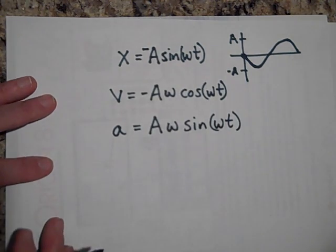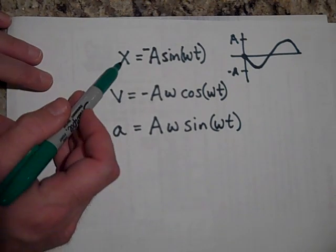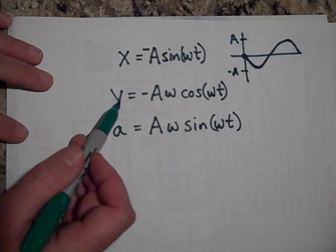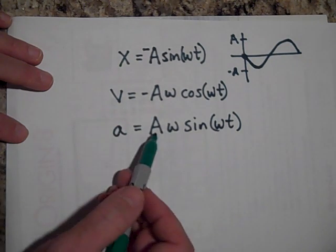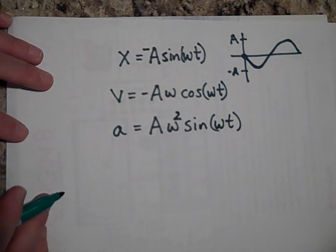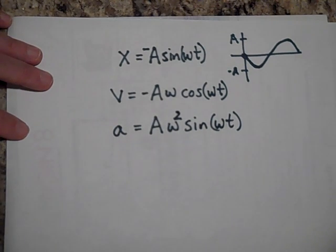You checking my math here? All right. Hey, in any case, look what the maximum x is. It's still A. What's the maximum v? It's still A omega. What's the maximum acceleration? It's still A omega, oops, squared. Oh, I almost missed that one. Yeah. It's still A omega squared.